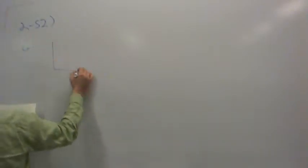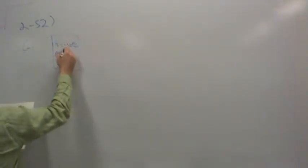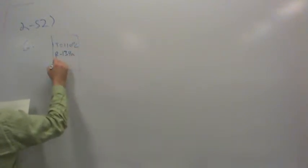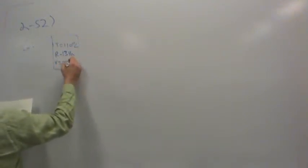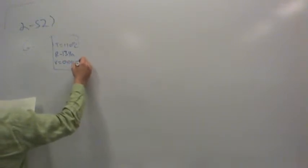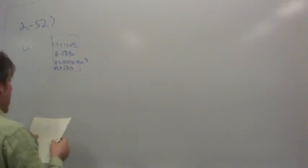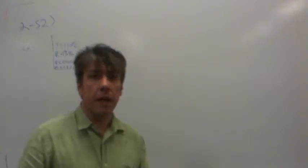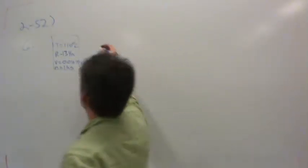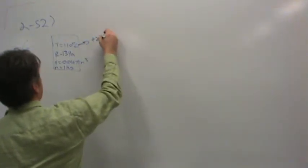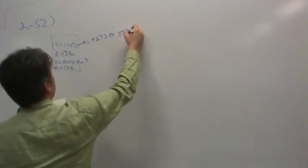So here's what we have. The tank is at temperature 110 degrees Celsius, we're dealing with R134A, the volume of the tank is 0.01677 cubic meters, and the mass is one kilogram. Since we're dealing with the ideal gas law, we should immediately convert that to Kelvin — add 273 to get a total of 383 Kelvin as the temperature in the tank.